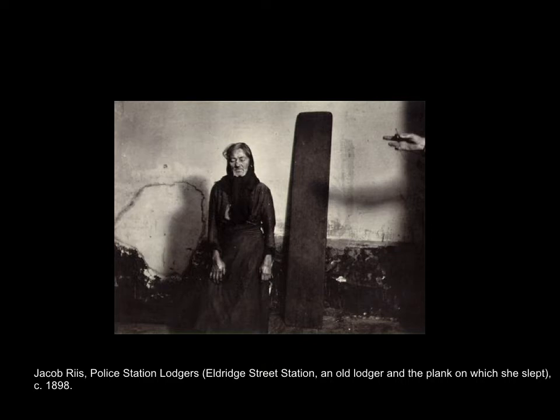Riis's photos were featured in Flashes from the Slums: Pictures Taken in Dark Places by the Lightning Process, an illustrated newspaper article in The Sun. Riis was an early user of magnesium powder, and the sudden burst of light in the darkness created images of startled-looking subjects. The snapshot look of the photographs helped lend credibility to his subject matter. Riis and his companions modified the flash powder mixture because it burned instantaneously. It was an improvement over the magnesium flare used by Timothy O'Sullivan in the Comstock lode mines.